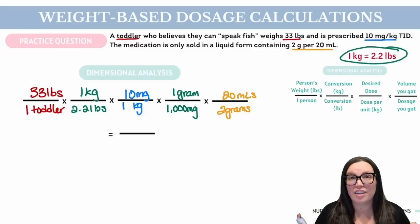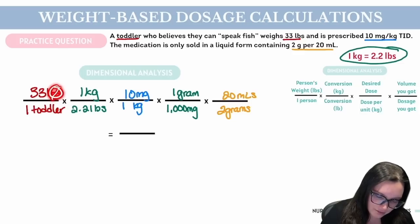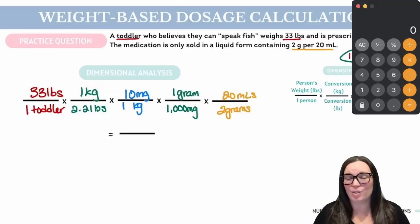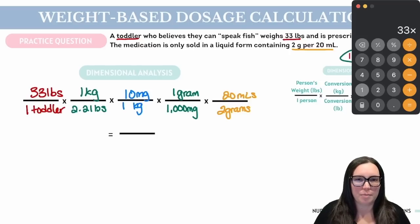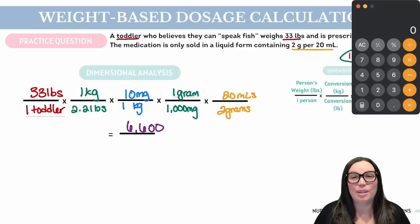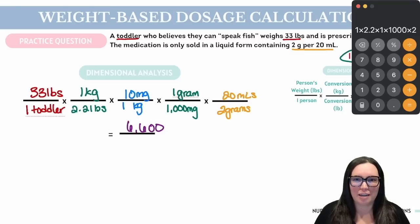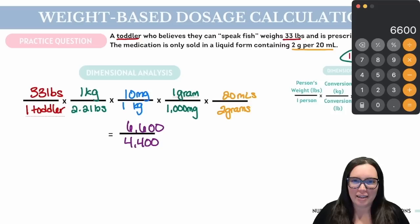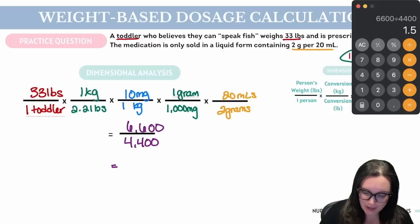Let's go through carefully and make sure everything lines up and cancels out, so we're only left with mLs for the toddler. Pounds cancels out pounds, kilograms cancels out kilograms, milligrams cancels out milligrams, and grams cancels out grams — leaving us with mLs. Now the math: top is 33 × 1 × 10 × 1 × 20 = 6,600. Bottom is 1 × 2.2 × 1 × 1,000 × 2 = 4,400. Dividing 6,600 by 4,400 gives us the correct answer of 1.5 mLs per dose, three times a day.